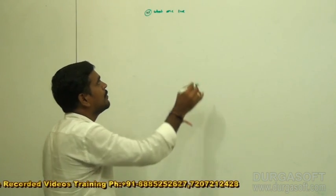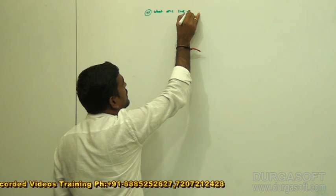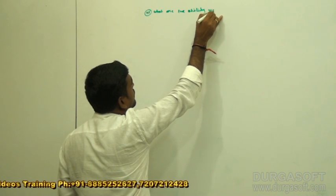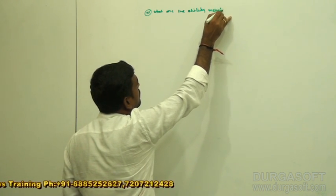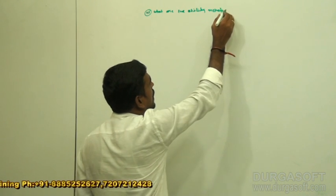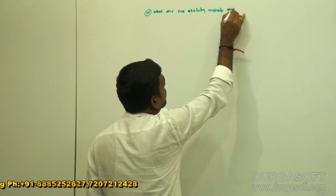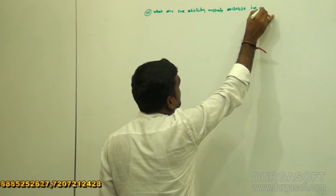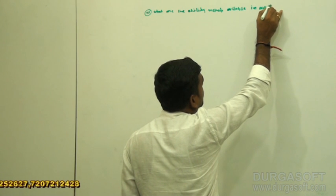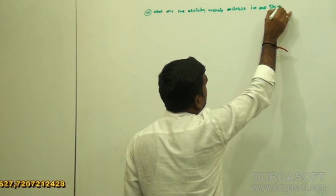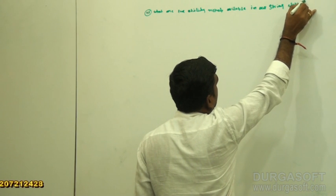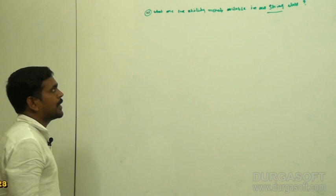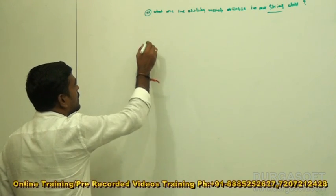What are the utility methods available in our string class? Many utility methods are there in our string class.